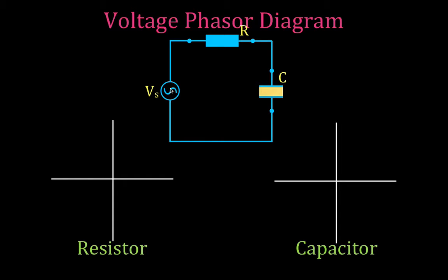To review: if you have a purely resistive circuit, then the voltage and the current are in phase. There is no angle — the angle between the voltage and the current is zero degrees. When we draw the vector representing the current, we typically draw that along the positive x-axis. Because they're in phase, we also draw the vector representing the voltage across the resistor along the positive x-axis.